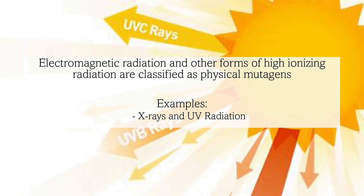UV radiation acts as a mutagen by causing two adjacent thymine bases to form covalent bonds, resulting in thymine dimers. This prevents the thymine bases from pairing with adenine, distorting the DNA structure. Such damage can lead to uncontrollable cell growth and potentially cause melanoma.